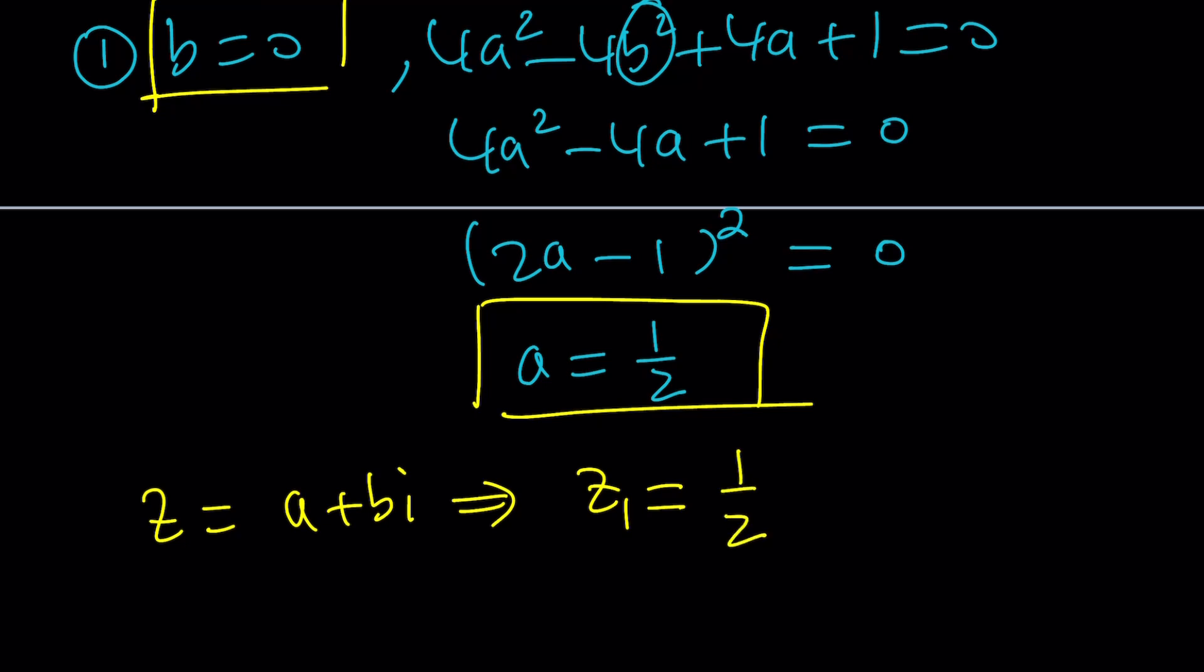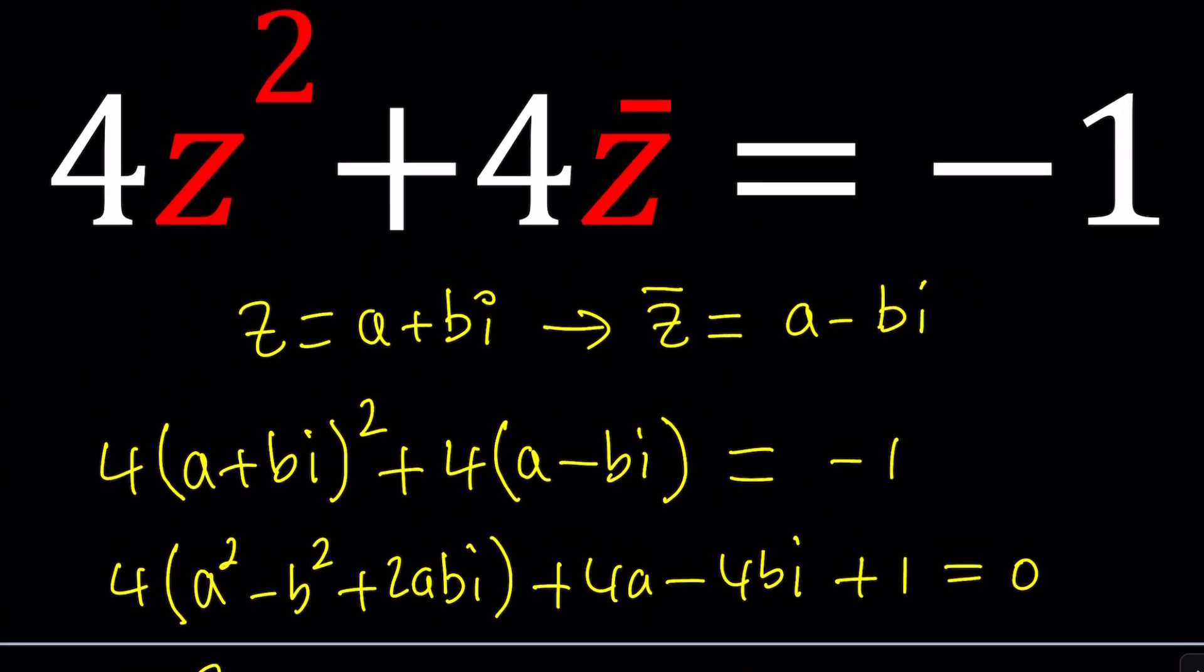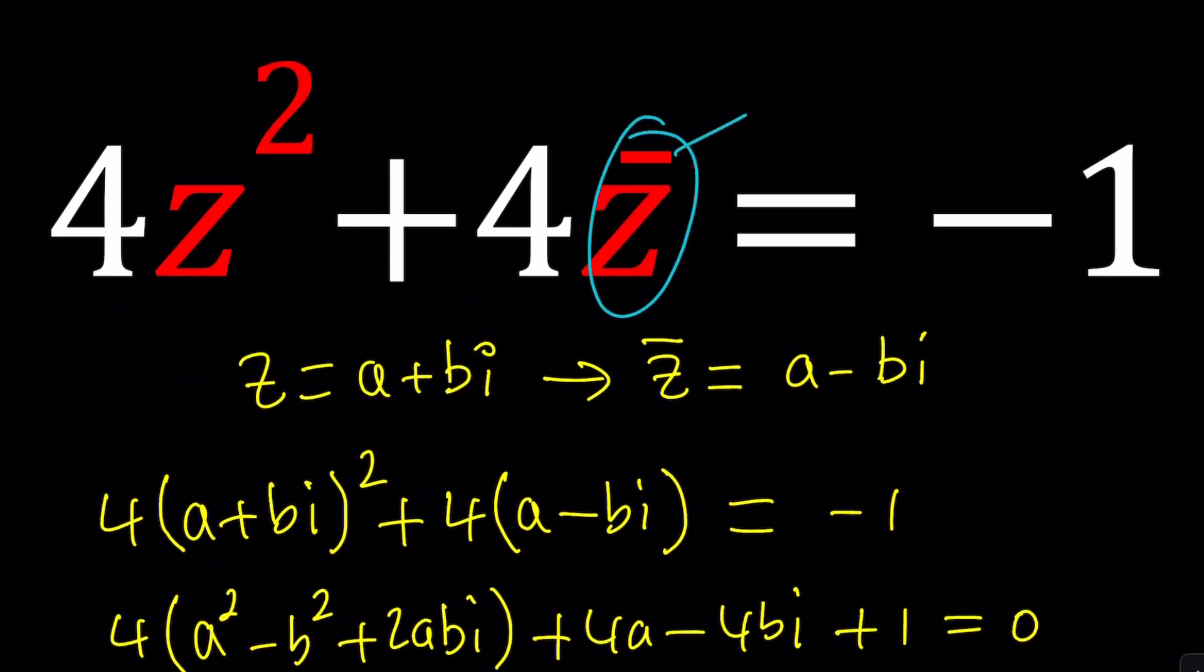Let's see how this unfolds. I'm gonna write it as (2a + 1)² = 0, and from here we get a = 1/2. So a is 1/2, b is 0. Therefore our first solution z₁ can be written as 1/2 + 0i, or just 1/2, which means z₁ is a real number, which means its conjugate equals itself.